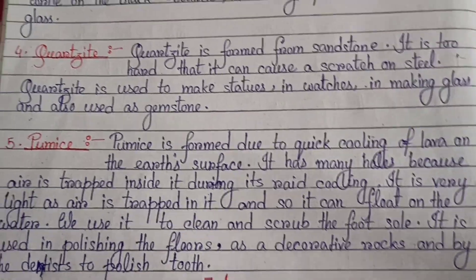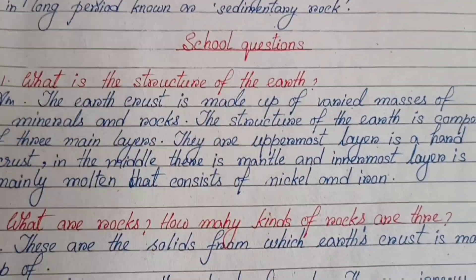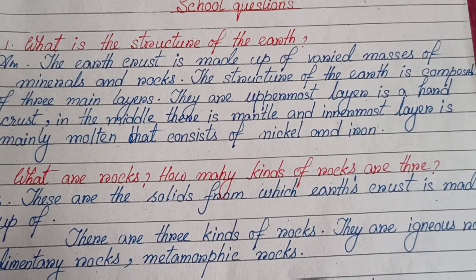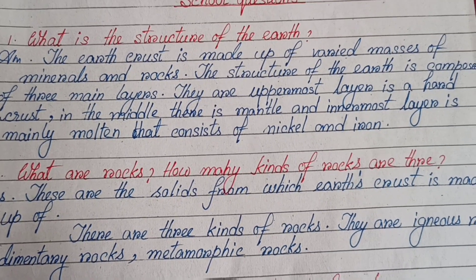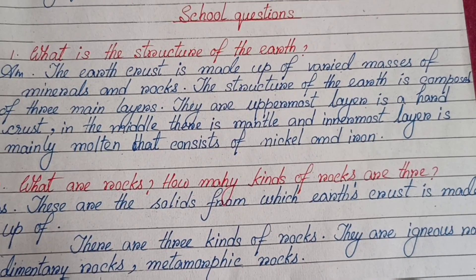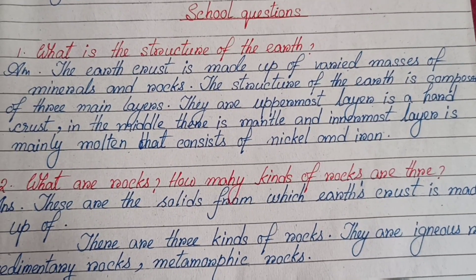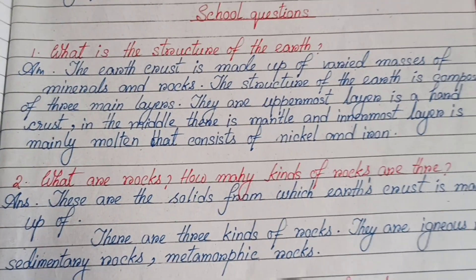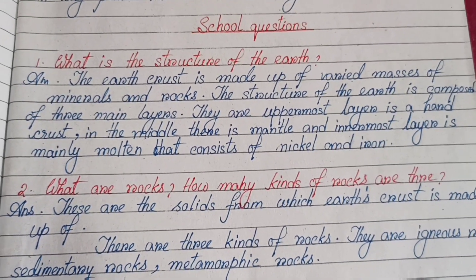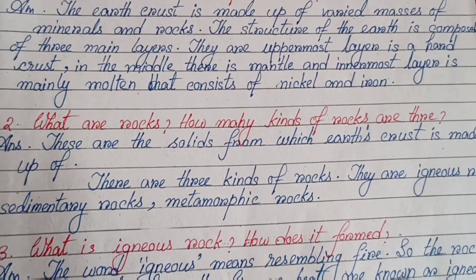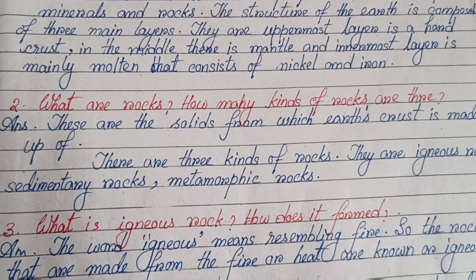Now it's time for question answers from the exercise. Number one: What is the structure of the Earth? The Earth's crust is made up of varied masses of minerals and rocks. The structure of the Earth is composed of three main layers: the uppermost layer is a hard crust, in the middle there is the mantle, and the innermost layer is mainly molten and consists of nickel and iron.